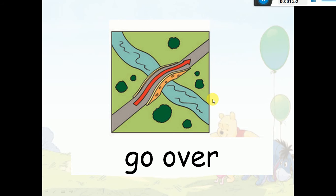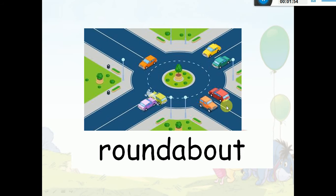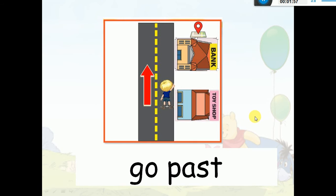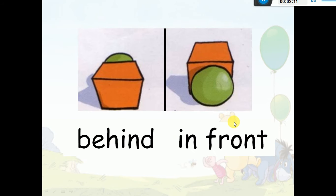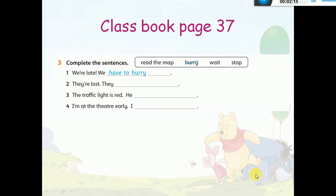'Go over the bridge.' Roundabout — دوار. 'Go past' — تخطى. For example, if I want to direct someone to the bank, I say: 'Go past the toy shop' — يعني تخطى محل الألعاب. Behind — خلف. In front — أمام.